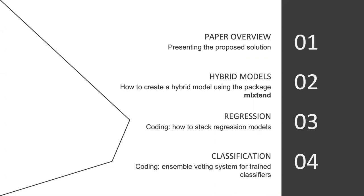Today we're going to be talking about hybrid models based on a paper we read previously, which we'll try to partially replicate. We'll do a paper overview, then show how to create hybrid models using the mlxtend library in Python. In the coding section, we'll demonstrate how to stack regression models — a way to combine models and create hybrid models — and for classification we'll show both stacking and an ensemble voting system for trained classifiers.